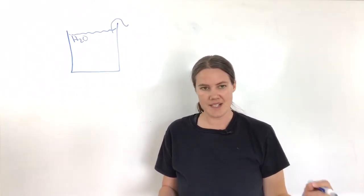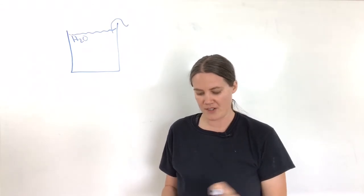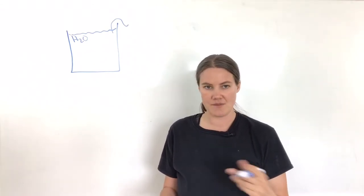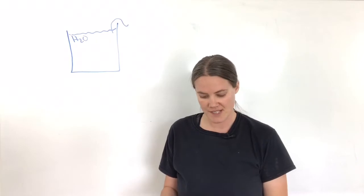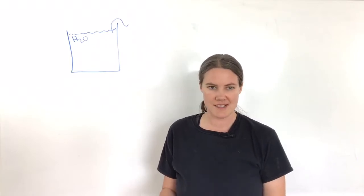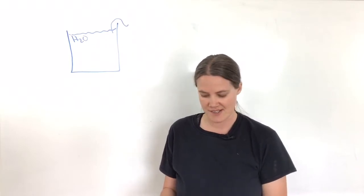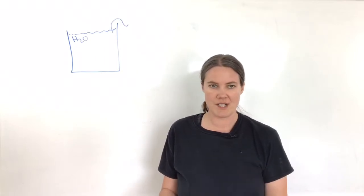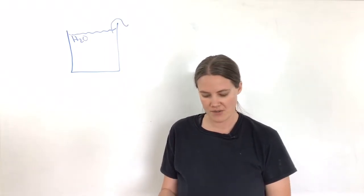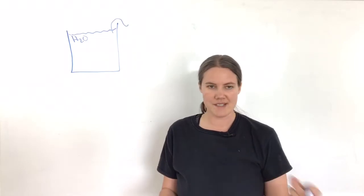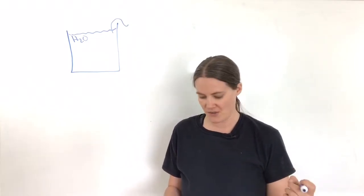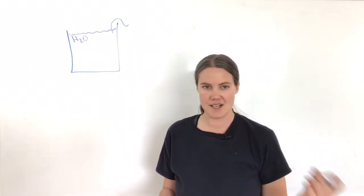We have a 70 gram piece of copper metal at 54 degrees Celsius that's placed in 50 grams of water at 26 degrees Celsius. If the final temperature of the water and the metal is 29.2 degrees Celsius, what is the specific heat in joules per gram degrees Celsius of the copper?